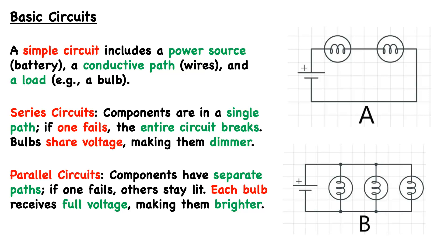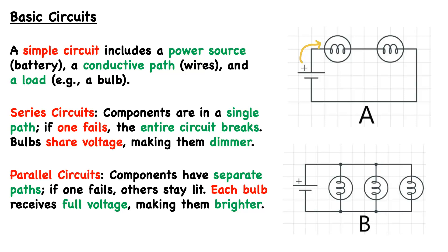Now let's talk more about basic circuits. A simple circuit includes three main components. The first is a power source, typically a battery. The second is a conductive path, typically wires. The third is a load, which is a power-drawing component like a light bulb. Looking at the diagrams on the right, the power source or battery is illustrated with two lines, the longer being the positive terminal. Current flow is defined to be in the positive direction, flowing from the positive terminal back to the negative terminal.